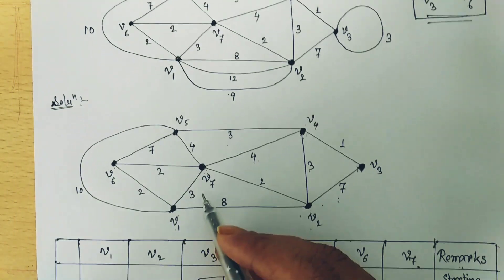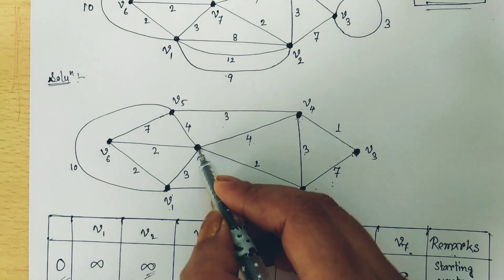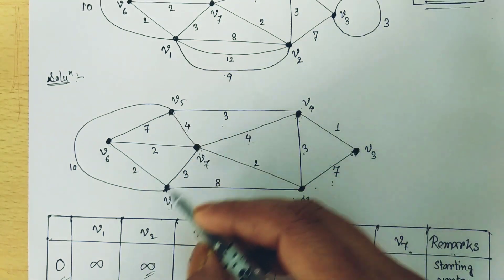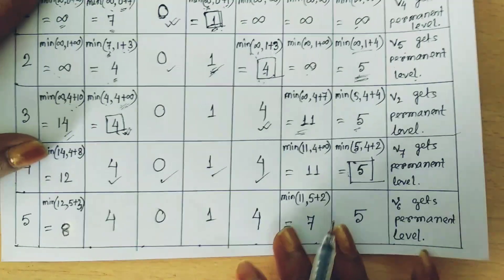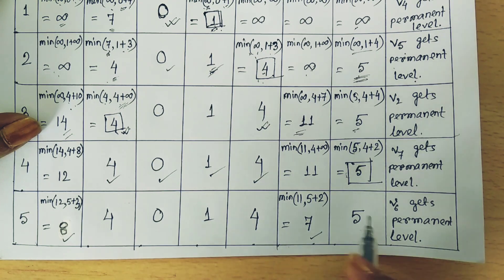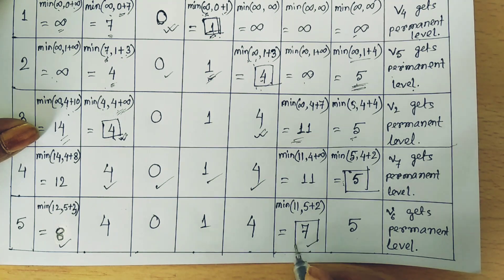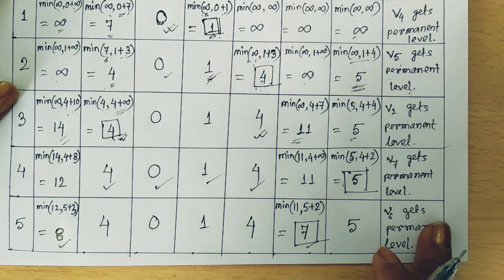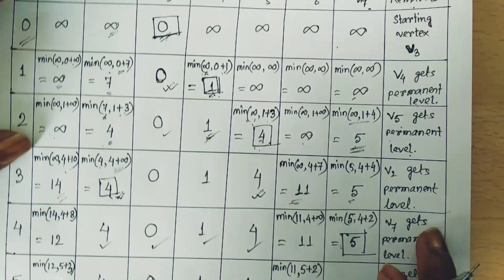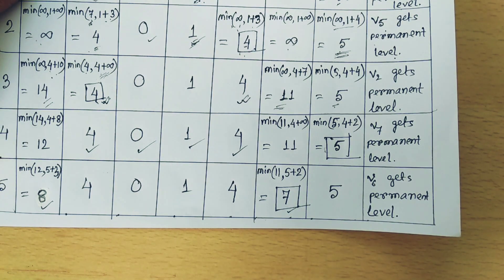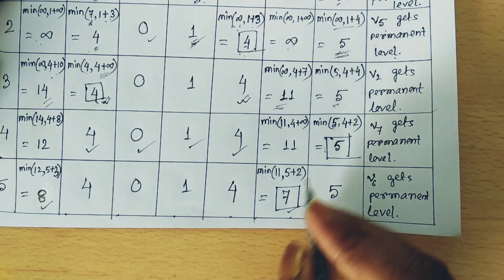We move to V7. V7 is connected with V1 and V6 — V5 already has its permanent label. After updating, the labeling value for V6 becomes 7, and the minimum among remaining vertices is 7. V6 gets its permanent label. Our target was to find the shortest path from V3 to V6, and V6 has now received its permanent label, so we stop.